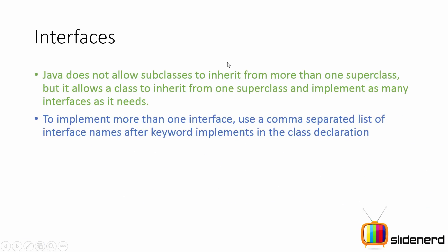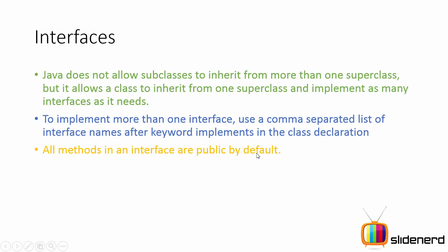Java does not allow subclasses to inherit from more than one superclass, but you can implement as many interfaces as you want — just use a comma between the different interface names. In the next video we are going to look at an example of interfaces, so don't worry about it. You can come back to this video once you've seen the example. All methods in an interface are public by default.